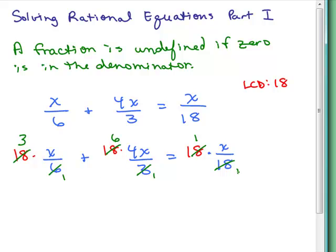We didn't want to have any denominators when we do this. So what do we have? 3 times x, 3x plus 6 times 4x is 24x equals, and this will just give you x. And now what we have is an equation that has no fractions. So we have 27x equals x.